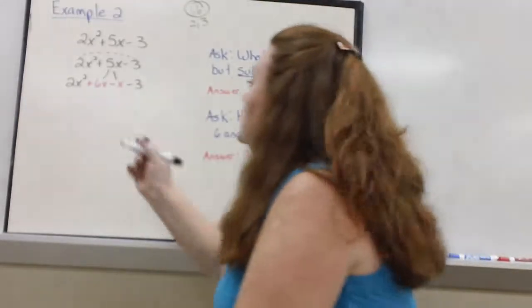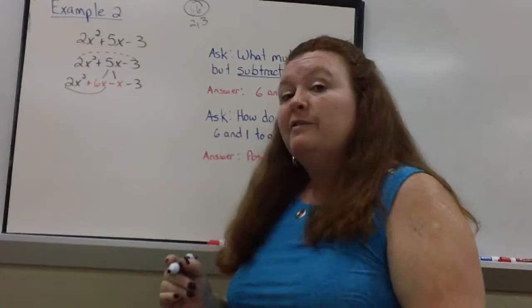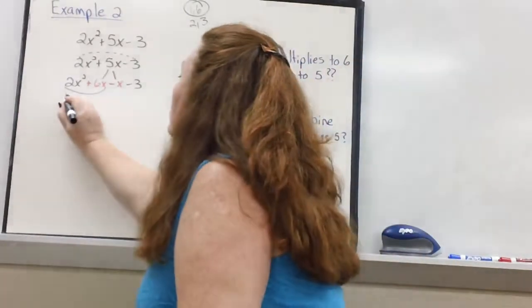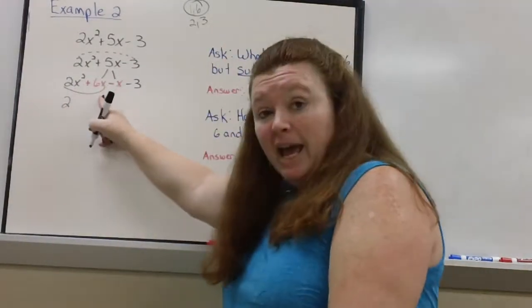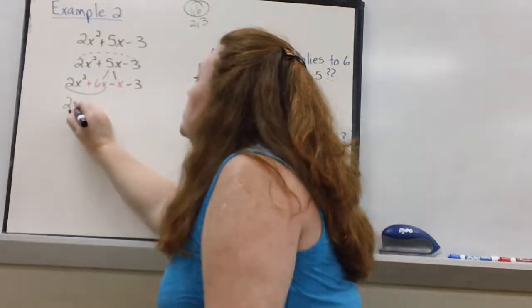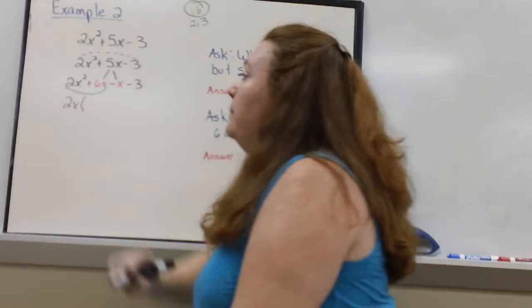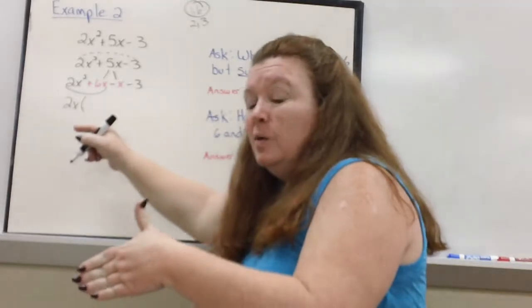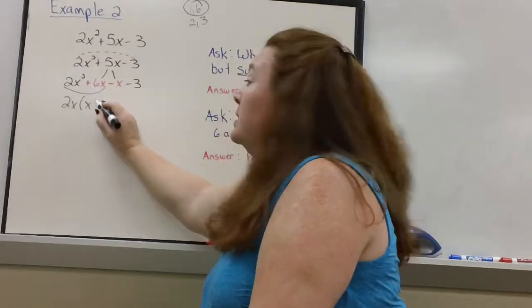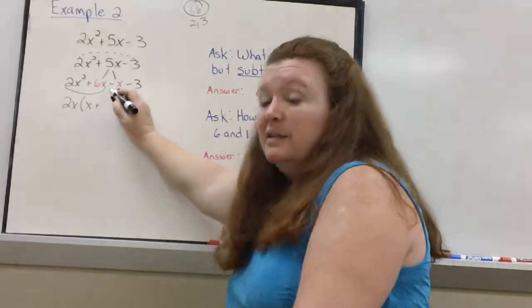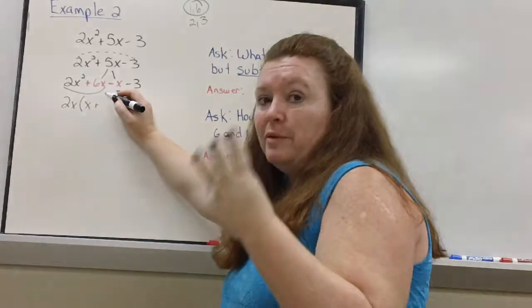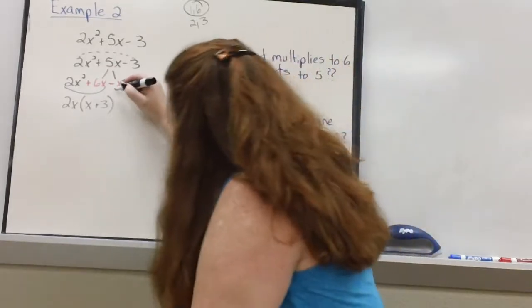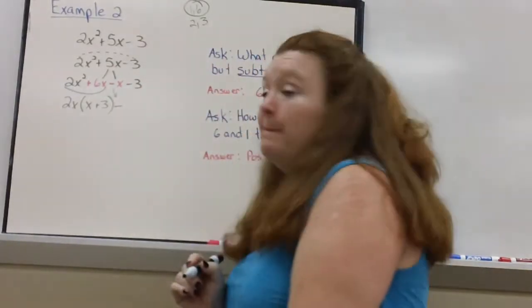So all I have to do now is factor it by grouping. Group them into 2 and 2. So the first two, what could I divide both of those terms by? Well, 2 and 6 can be divided by 2. So I'll write a 2 out here. x squared and x can both be divided by x. So a 2x is my common factor. When I divide 2x squared by 2x, what is left? Just an x. And I have a plus sign. 6x divided by 2x is 3. Now, remember the rule. The middle sign has to come straight down.